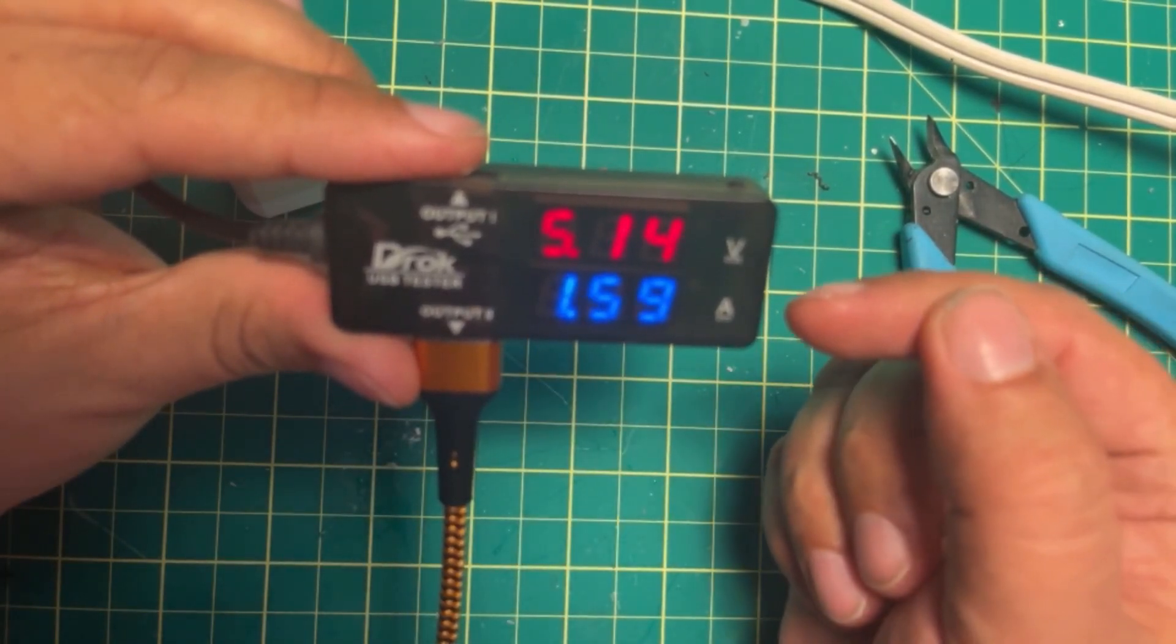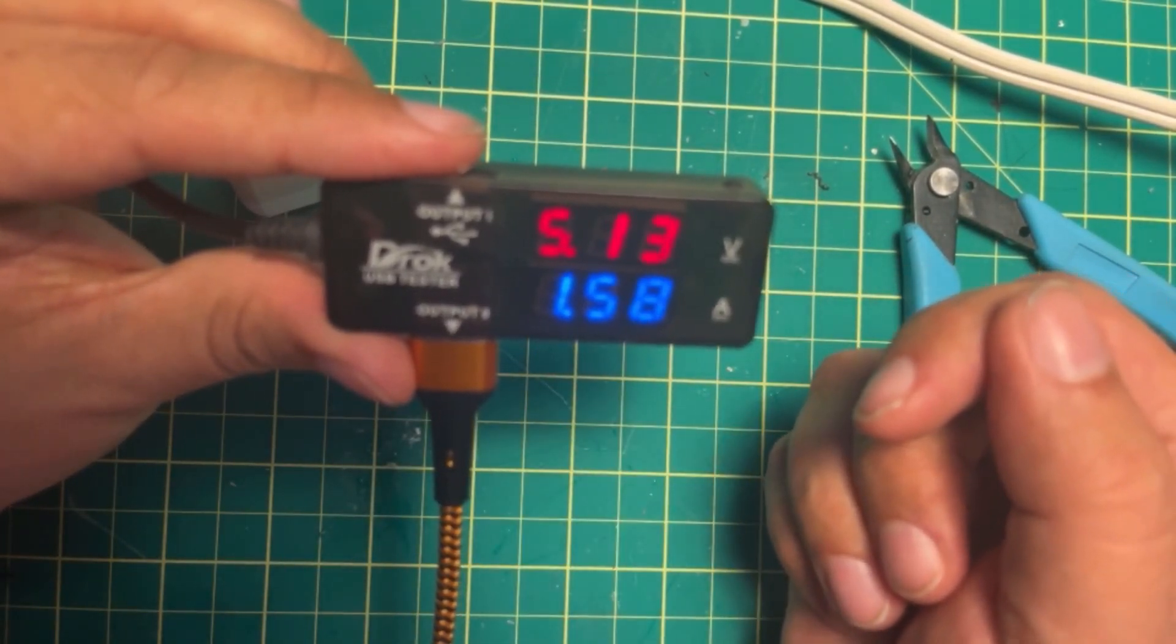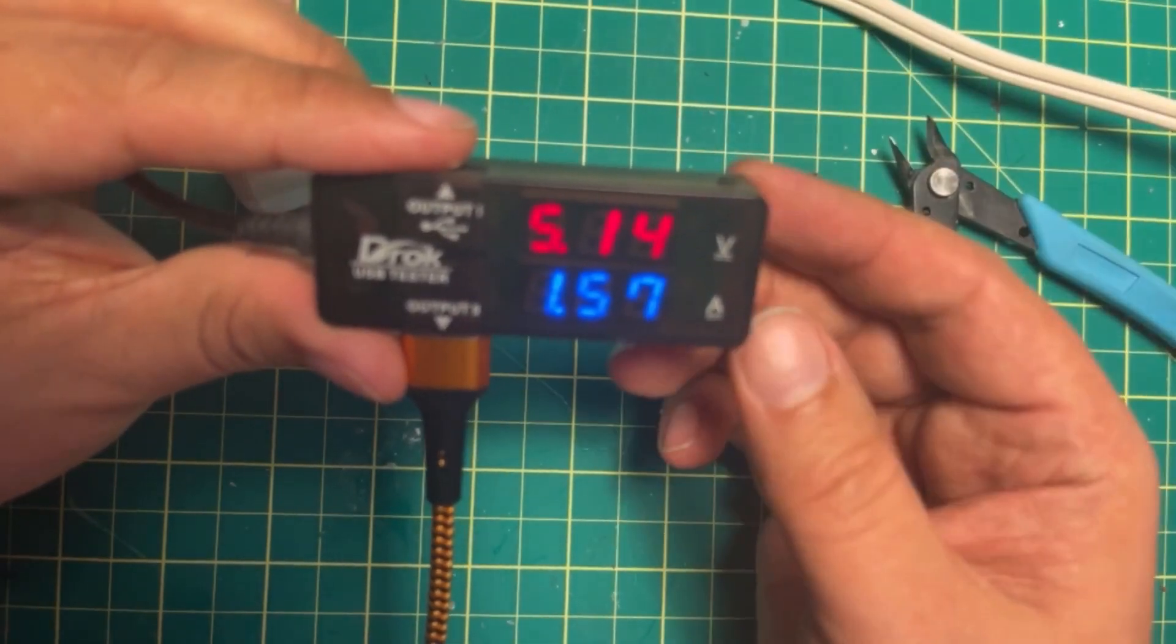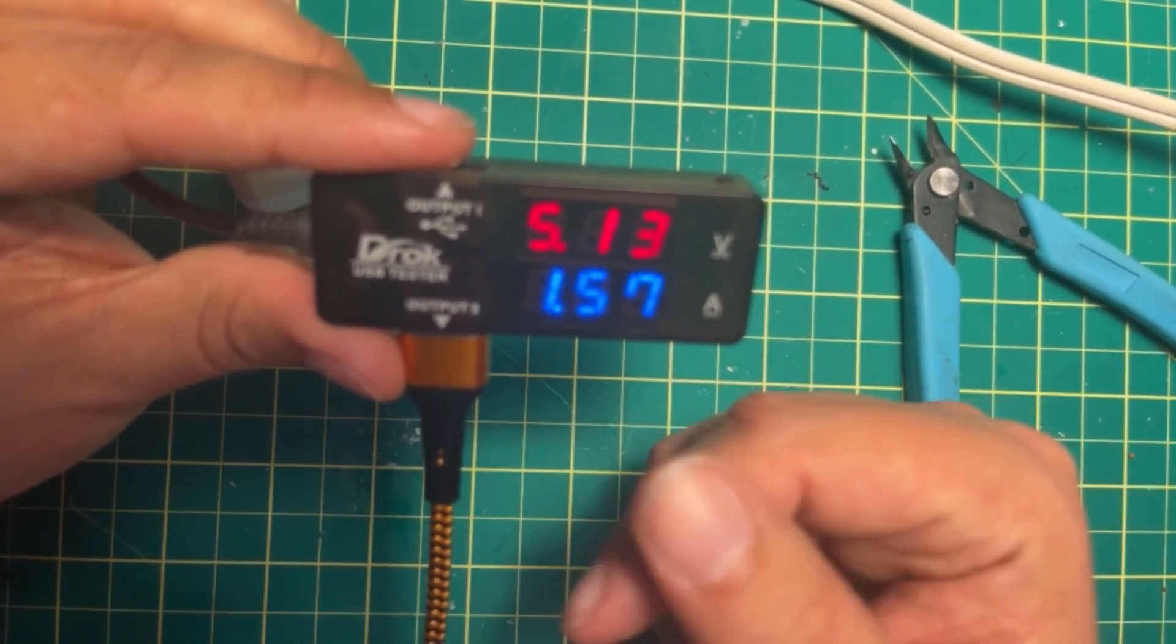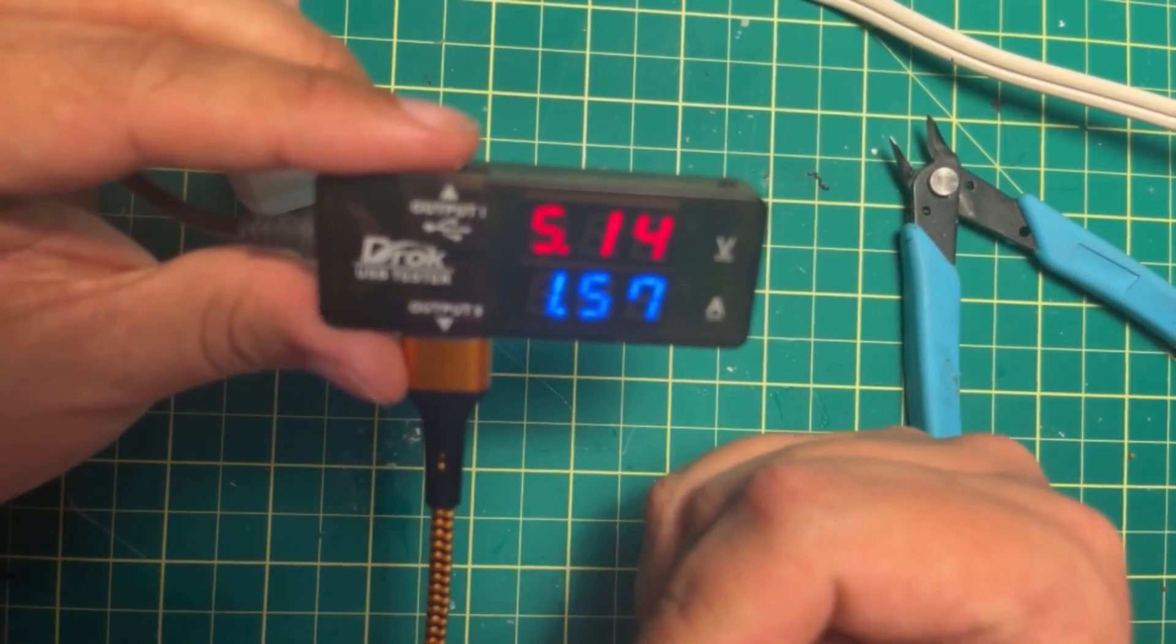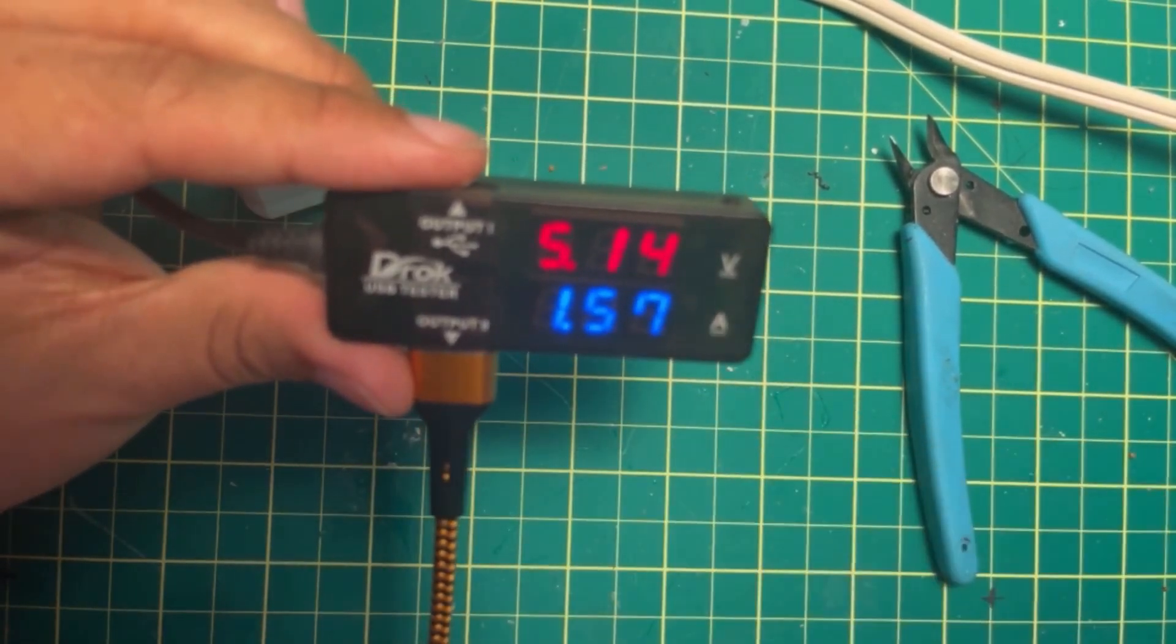And it's drawing up to 1.5 amps right now. An iPhone can potentially draw up to 2 amps, so a little device like this is great to test to see if any ports or whatever are not working on a device that charges via USB.